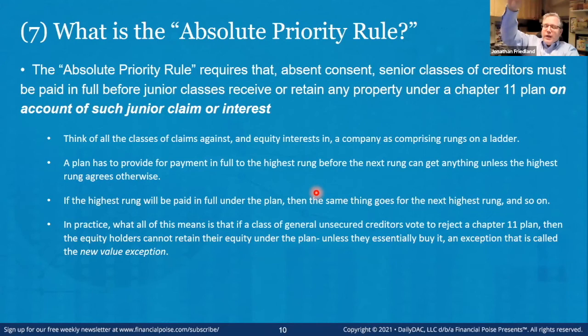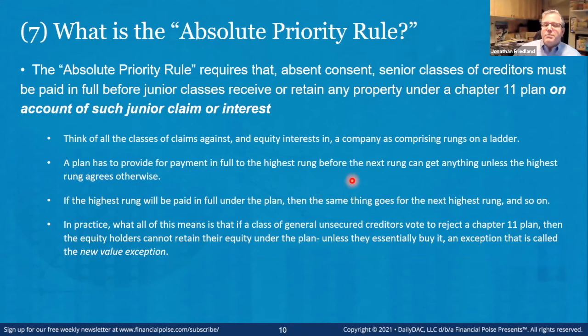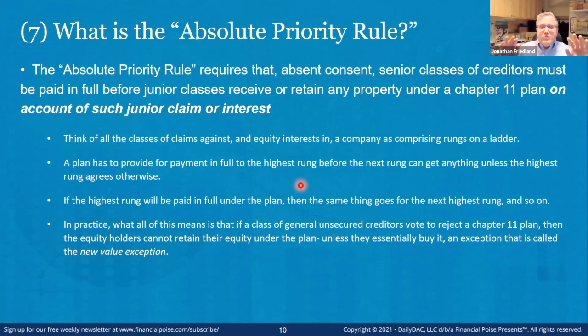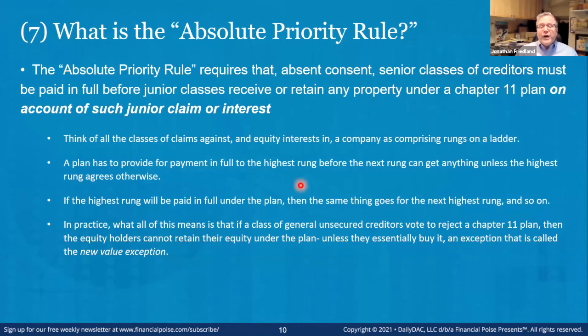A whole separate topic is gifting: can a senior class simply say, 'I could have gotten everything but I'm going to give some of my distribution to a class two levels below me'? The middle class in between will say you can't do that; the senior class will say 'sure I can, it's my money — they wouldn't have gotten it anyway.' Case law goes different ways on that. And a later slide addresses how you pick venue — you study which legal issues may be important, figure out whether they've been decided differently in Delaware versus Texas versus Chicago versus New York, and try to file where those legal issues are likely to come out the way you want.